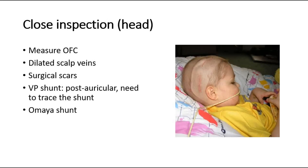We then do close inspection of their head. This is a picture showing a child who had a VP shunt done. When we closely inspect the head, we measure the head circumference, and expect to see some dilated scalp veins and surgical scars. The VP shunt is the ventriculoperitoneal shunt, as seen in this picture. We need to trace the shunt. Another shunt we might see is an Ommaya shunt.